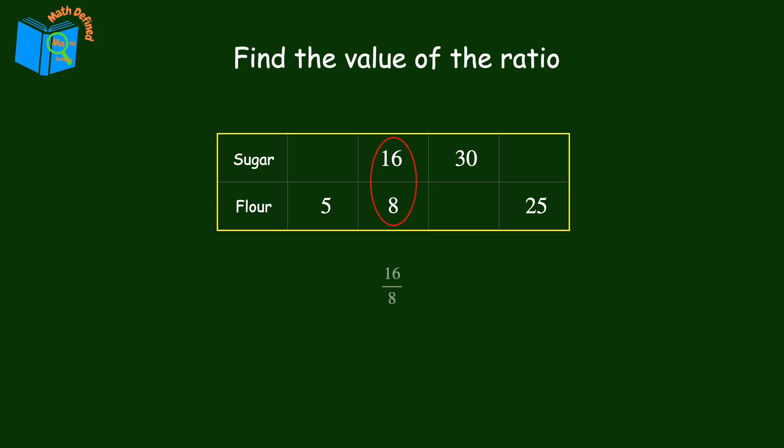We'll use the given ratio 16 over 8. To find the value, we divide 16 by 8, which is 2. So the value of the ratio is 2, which means that there is 2 times the amount of sugar than flour.